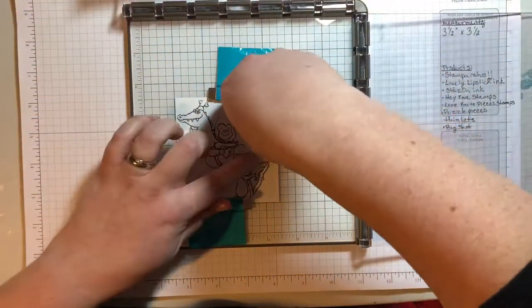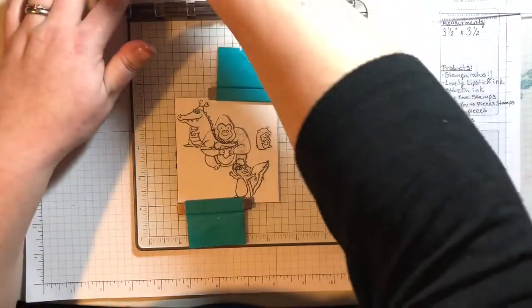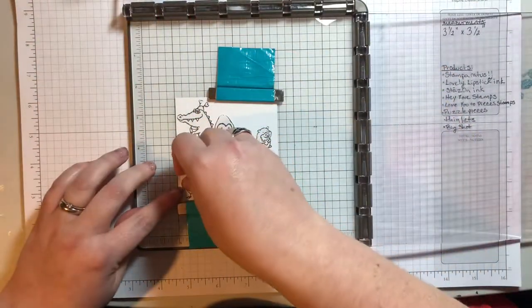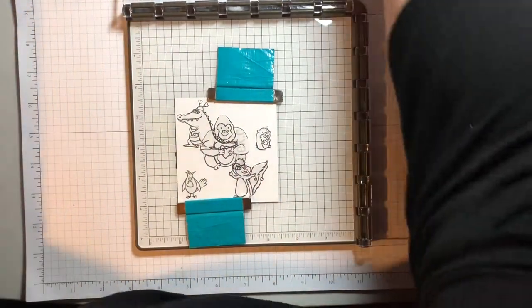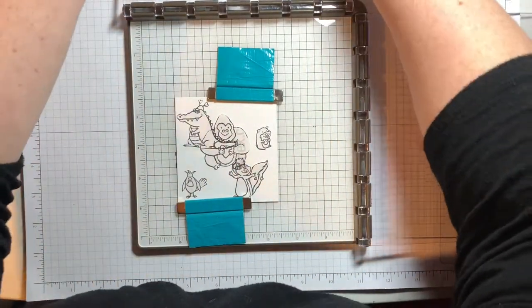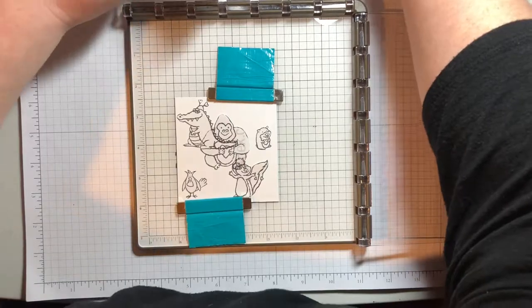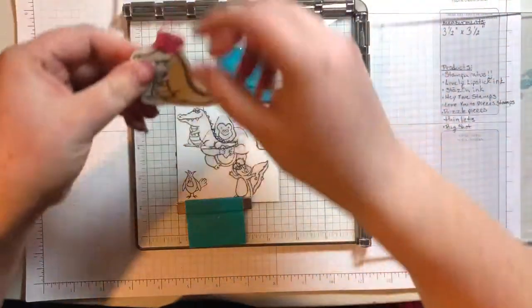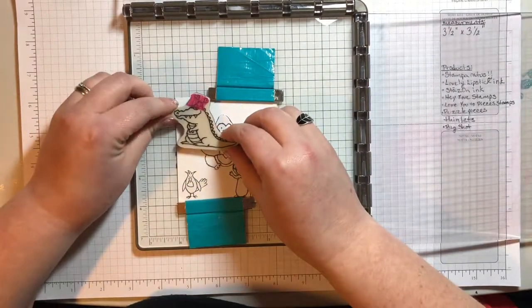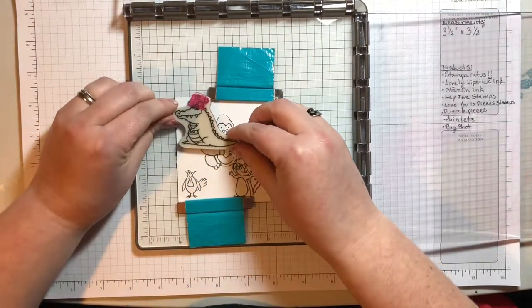And then my little skunk is going to go down here in the corner. And these guys are just going to fill in the gaps here and down here. So why did I do that? Because now I can bring in all of my stamps, line them up exactly where they should go on the image, and then use the plates to mount them.